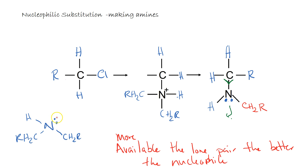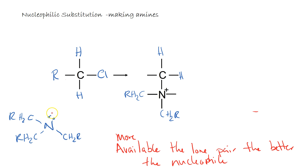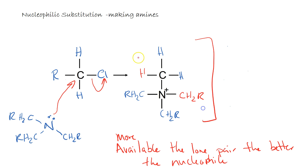Our secondary amine's lone pair would be even more available to react. So the secondary amine would be even more able to attack the haloalkane. Again donating, we would end up with the hydrogen being removed again. Our product this time would be a tertiary amine, which now has the most amount of electron donation — the inductive effect towards the nitrogen — making the lone pair of electrons even more available. The tertiary amine would again react with the haloalkane, removing the chlorine, and we would end up with a quaternary ammonium salt because there are no more hydrogens that can be extracted.